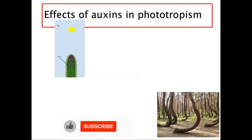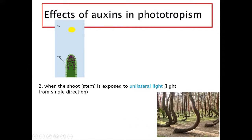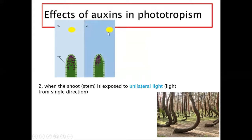Auxins are found at the tip of the shoot. When the shoot is exposed to unilateral light — light from a single direction — this side will have more light and this side will have less light. Since auxins are sensitive to light, they migrate to the dark side.